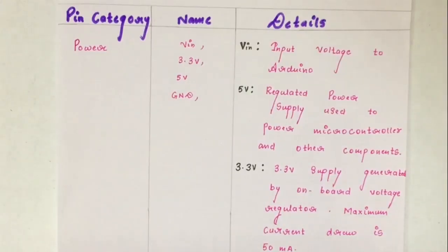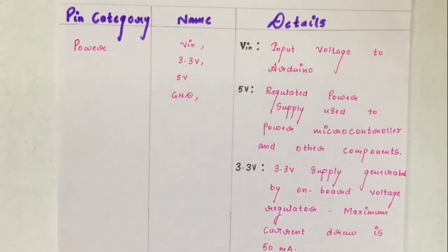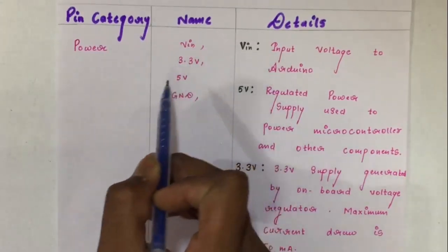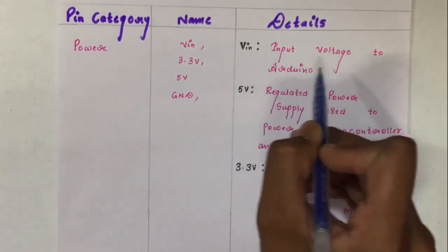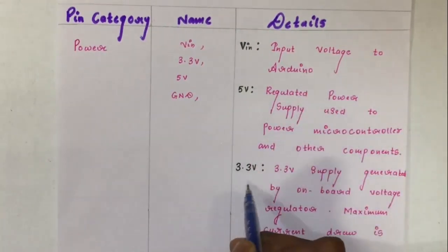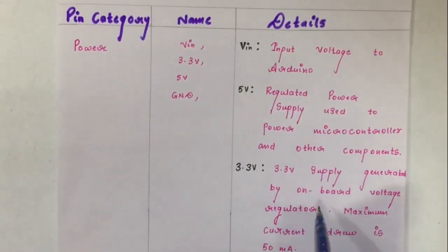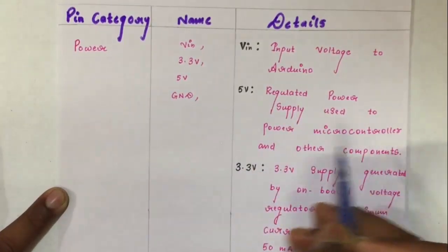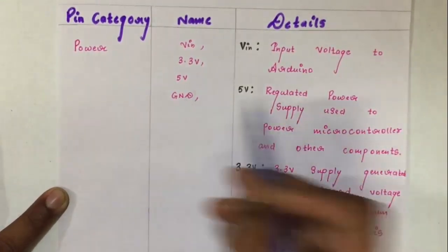Now let us talk about the pin description of the Arduino Uno. Arduino Uno has 14 digital input-output pins, 6 analog input pins, a USB connection, a power barrel jack, an ICSP header and a reset button. First we will talk about power pins. Their names are respectively VIN, 3.3V, 5V and GND. VIN is the input voltage to Arduino. 3.3V is a supply generated by the onboard voltage regulator with a maximum current of 50mA. 5V is a regulated power supply used to power the microcontroller and other components. GND is the ground pin.